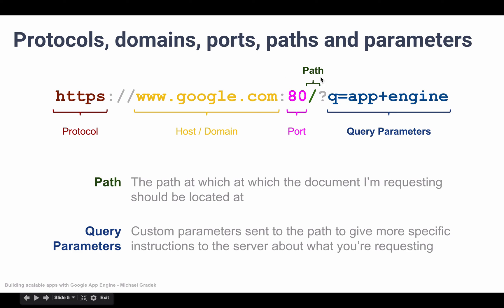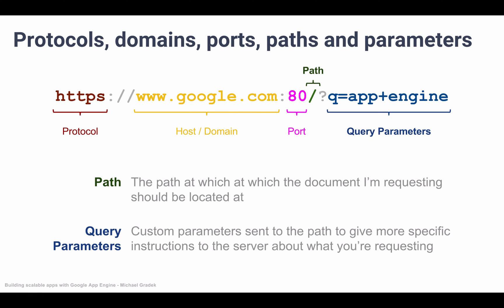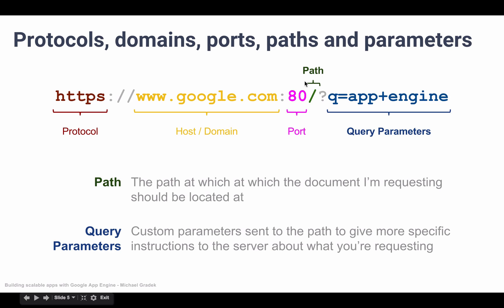The main thing we need to take away from this lecture is the path and the query parameters — we will be using these all the time. We are going to be building an application which responds to requests sent by users, and the way a user sends us a request is using this path and query parameters. We won't have to worry too much about the domain because when developing locally we simply don't have a domain name, and when we deploy online we will. The path is going to be the most important concept by far in this course.